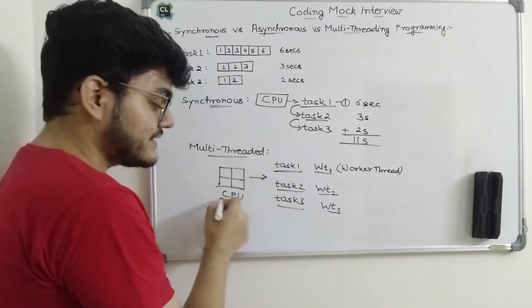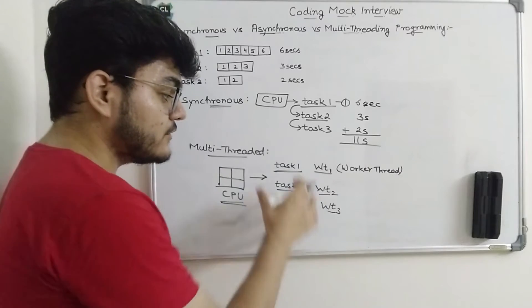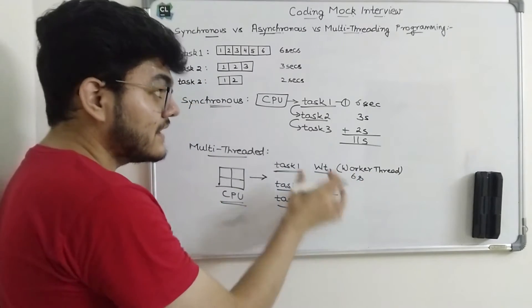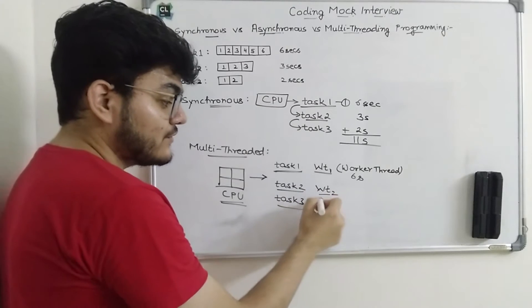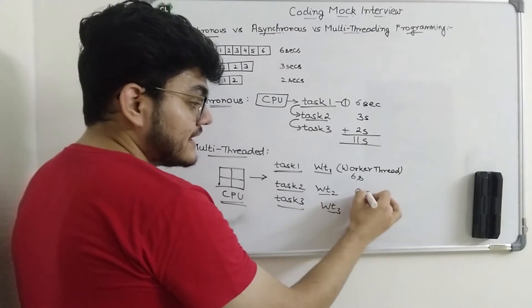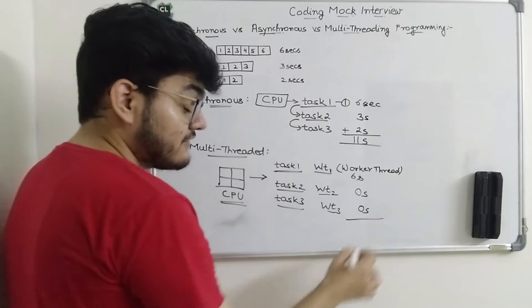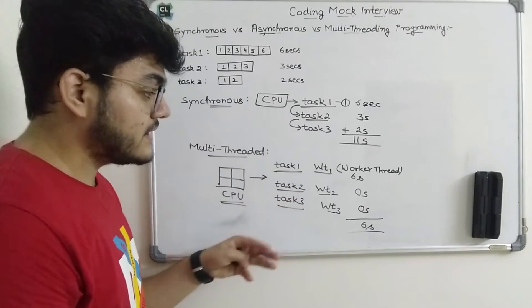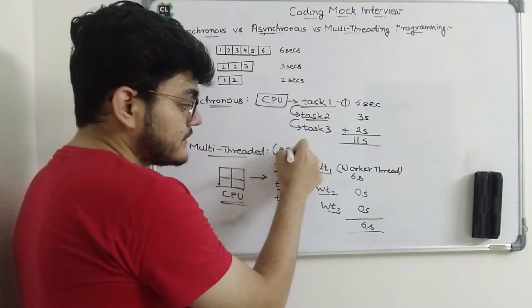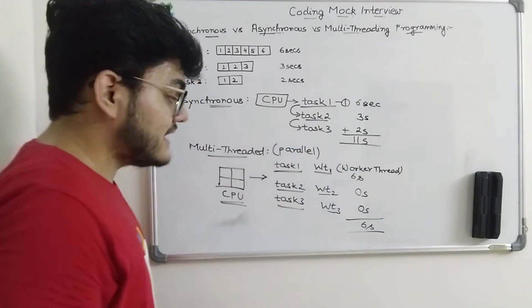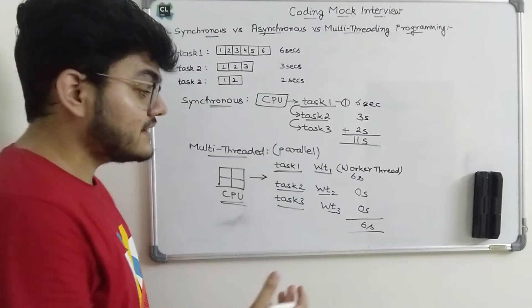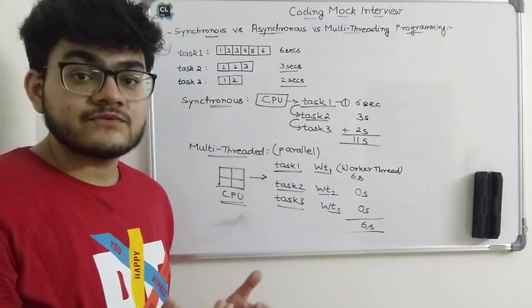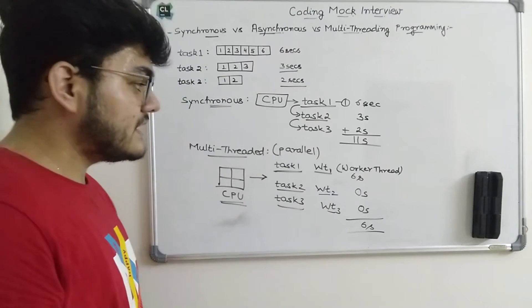How much time will it take for a multi-threaded CPU to complete all three tasks? Task 1 takes 6 seconds, and in those same 6 seconds the other two worker threads can complete their tasks of 3 seconds and 2 seconds. So effectively it takes only 6 seconds for all three tasks to complete because they run in a parallel environment. This is how multi-threaded programming works.